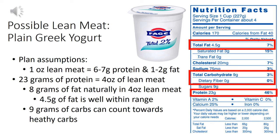One thing you do have to consider though: yogurt has carbohydrates. This particular brand has nine grams of carbohydrates that can count towards your healthy carb amount. However, if you're consuming this yogurt at bedtime in place of casein, those nine grams are not a huge deal unless you're in cut three, which is a very strict diet — then you do want to consider those nine grams of carbs.